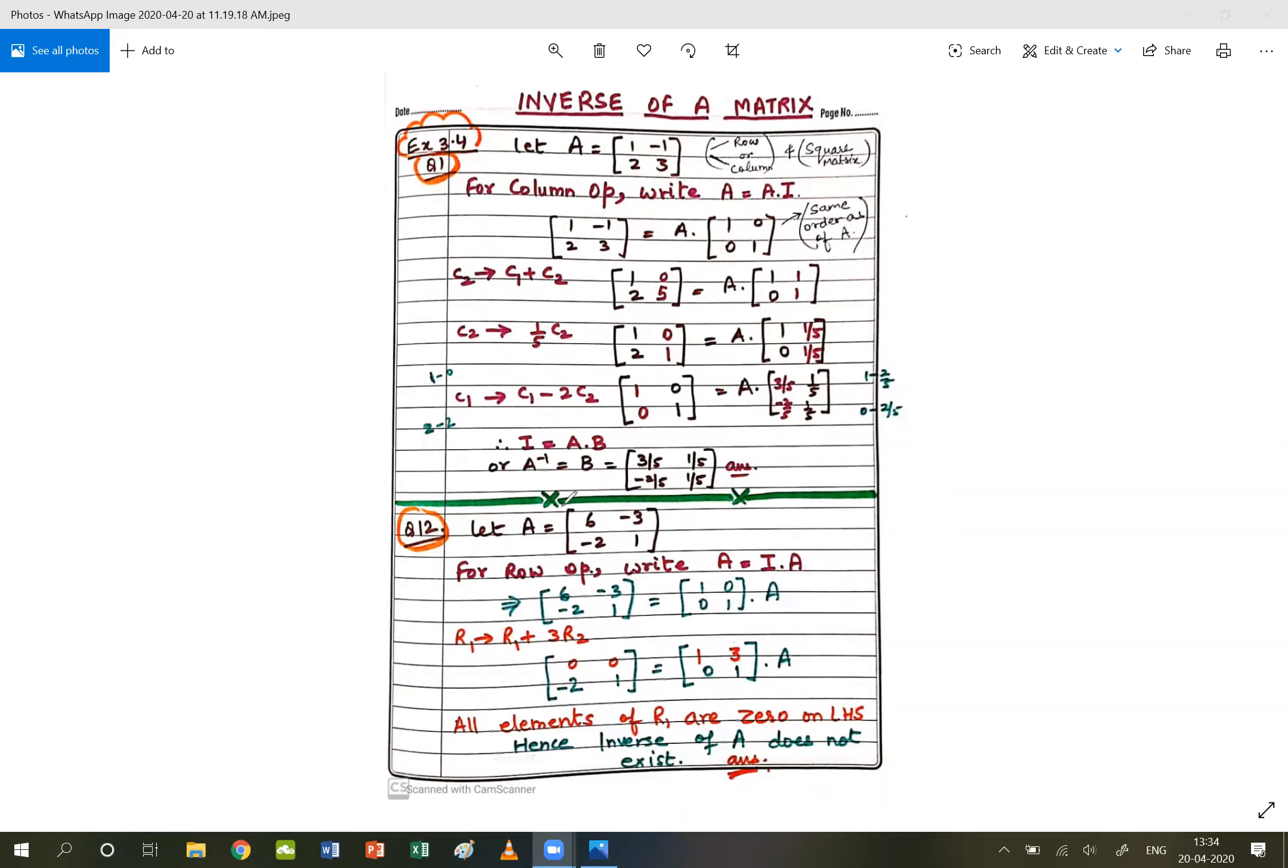Again, since the exercise mentions just the practices, we name it A and we write let A equal to [6 -2; -3 1].